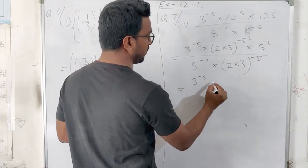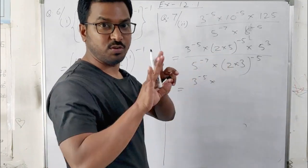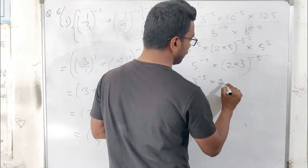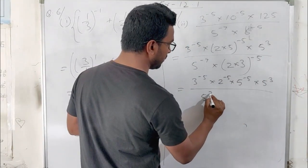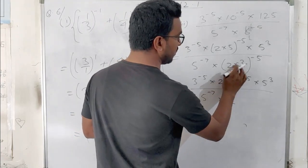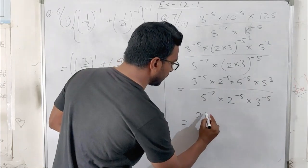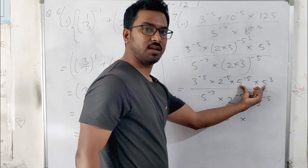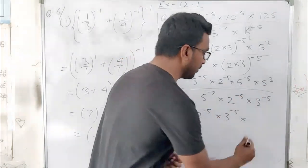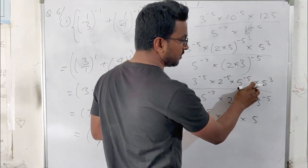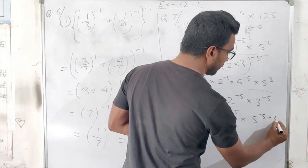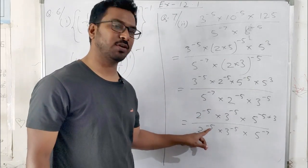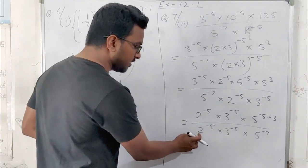The next question asks us to find the value of m. The base is 5, with power m divided by 5 to the power minus 3 equals 5 to the power 5. Subtracting the exponents: m minus (minus 3) equals 5, which gives m plus 3 equals 5. Since both sides have base 5, we compare exponents directly, so m equals 5 minus 3, giving m equals 2.